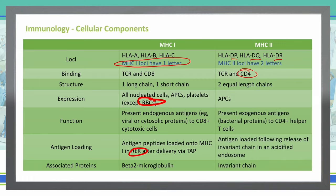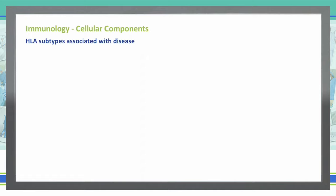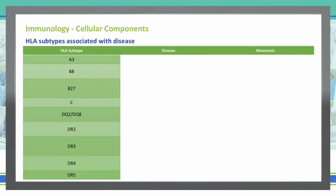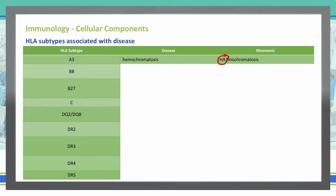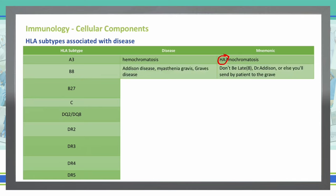Now let's talk about the HLA subtypes associated with diseases. HLA-A3 is associated with hemochromatosis — you can remember that as 'HA-3,' which begins the hemochromatosis word. HLA-B8 is associated with Addison's disease, myasthenia gravis, and Graves' disease.